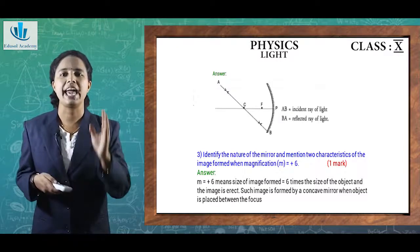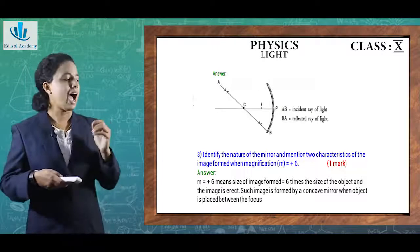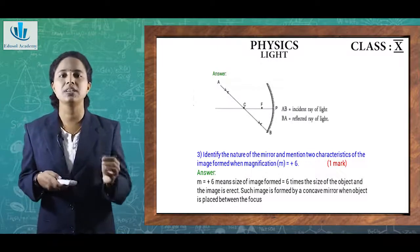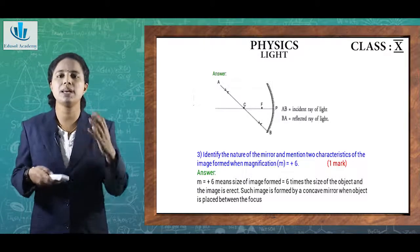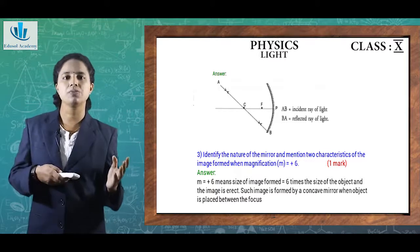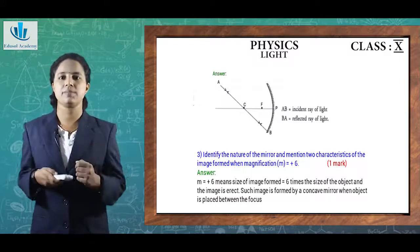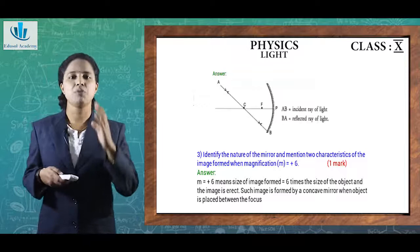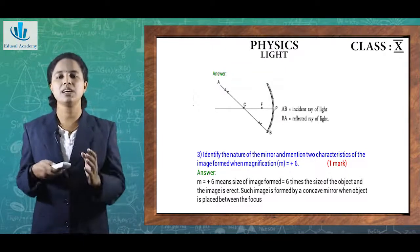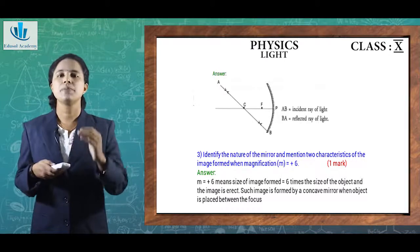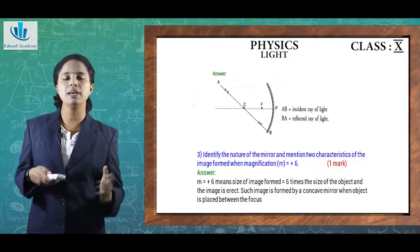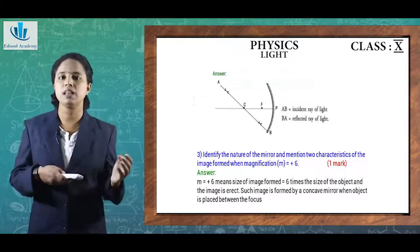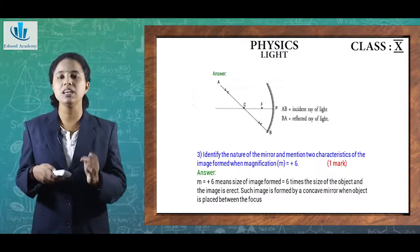Third question: identify the nature of the mirror and mention two characteristics of the image formed when magnification equals +6. A positive magnification means the image is erect, and the size of the image formed will be 6 times the size of the object. Such an image is formed in the case of a concave mirror when the object is placed between the focus and the mirror.